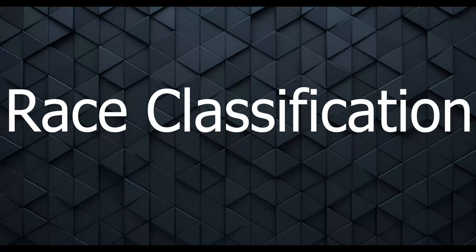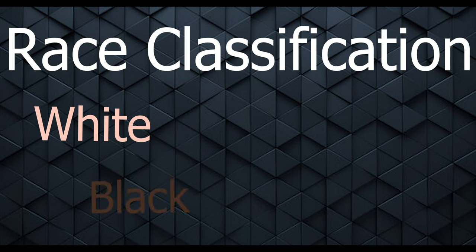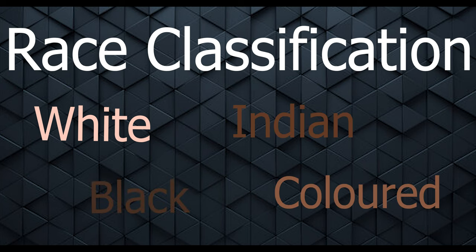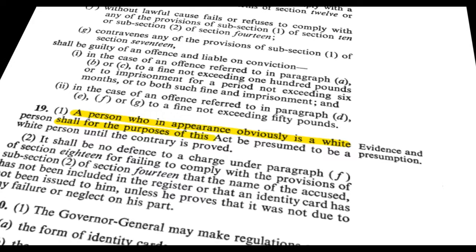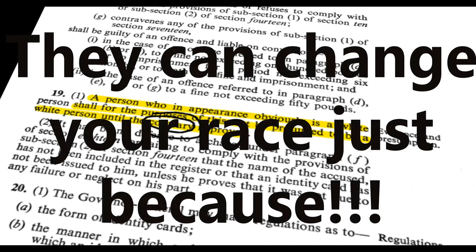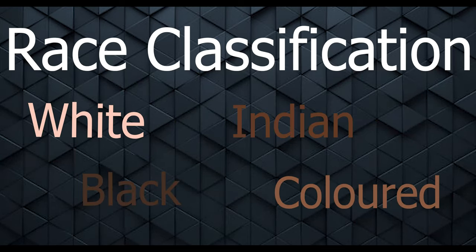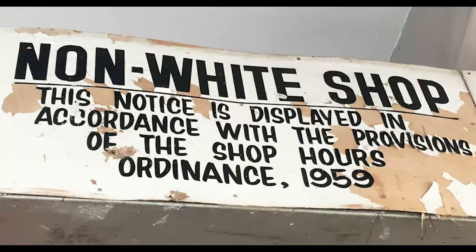The race classification system introduced by apartheid was a meticulously structured mechanism aimed at categorizing South African citizens based on subjective and arbitrary criteria. This racial classification, enforced through the Population Registration Act of 1950, relied on the visual assessment of physical attributes, ancestry, and social acceptance to place individuals into distinct racial groups. Government-appointed officials held significant power in determining an individual's racial identity, often leading to absurd and unjust classifications. This classification became a tool for the systematic enforcement of discriminatory policies, dictating where people could live, work, and interact within society.